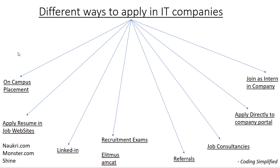The first option is on-campus placement. I've added this just for awareness — it's specific for people who are in college, in their third or fourth year. Companies basically come to your own campus and recruit people. This is one of the best opportunities if you're in college, so apply for different companies coming to your campus and you can get a job offer on-campus itself.